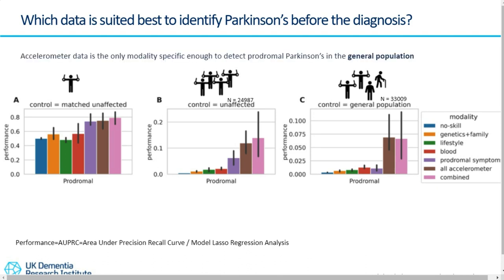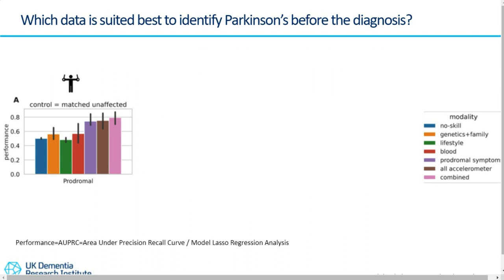The conclusion is: accelerometry alone can predict Parkinson's disease in the general population. If you are interested in more detail and want to see the code, there is a preprint available, and the paper will be published soon. The code link is also available. Thank you.